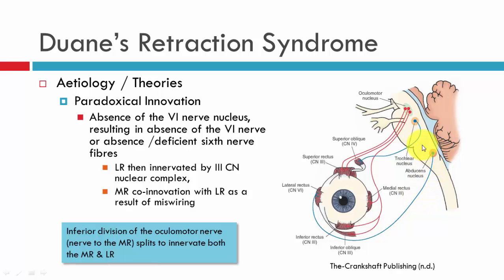It seems that in response to this agenesis, the third nerve's inferior division — that which is supplying the medial rectus — actually splits and starts to innervate the lateral rectus as well. So now we have the third nerve not only supplying the medial rectus and the other vertical muscles (the superior rectus, inferior rectus, and inferior oblique), but also supplying the lateral rectus. This results in co-innervation of both the medial rectus and the lateral rectus. When the eye attempts to adduct, utilizing the fibers going to the medial rectus, the lateral rectus is also innervated at the same time, producing anomalous eye movements.